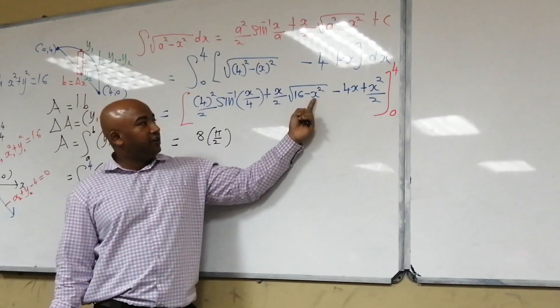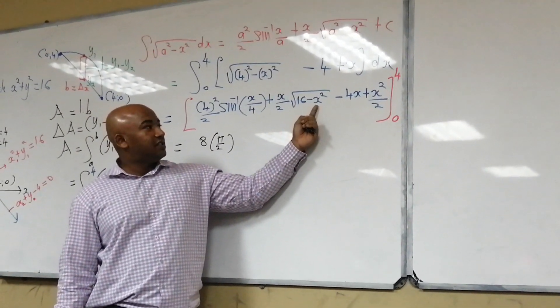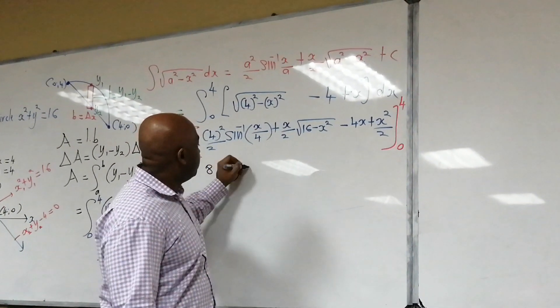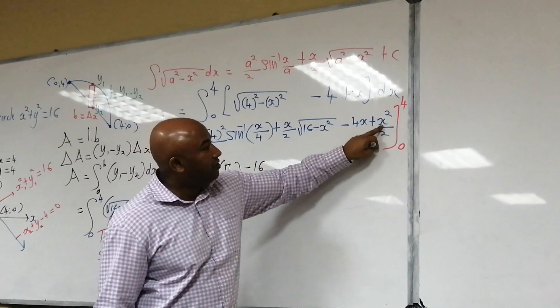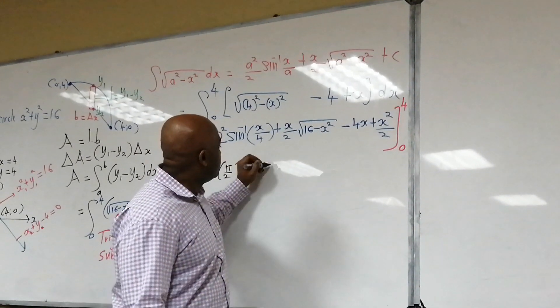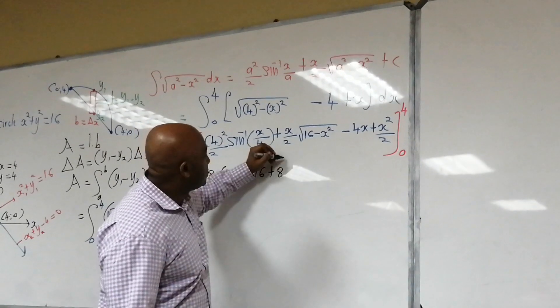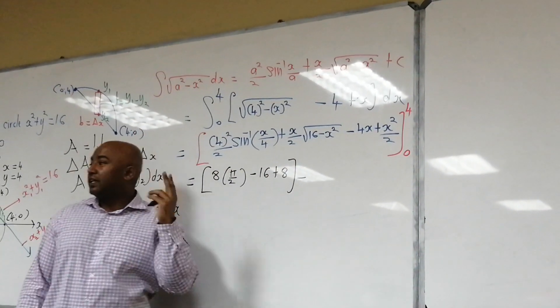And then if you put the 4 here, 16 minus 4 squared is going to be 0, minus 4 times 4, that's minus 16, and then 4 squared is 16, divided by 2, that will be 8, so that is the substitution for just the number 4.